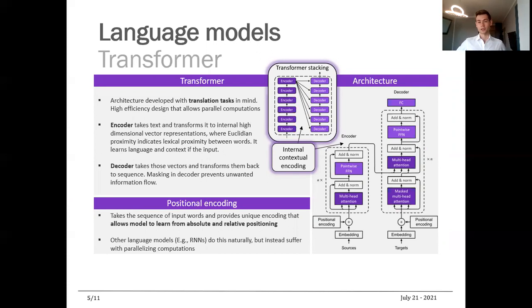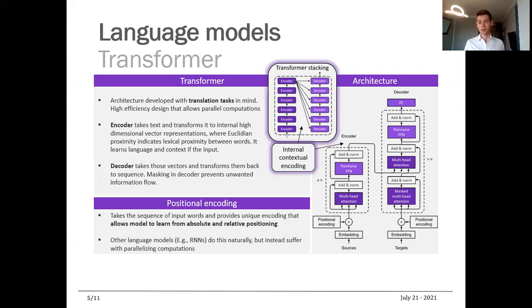That brings us to the models being used to do this classification. We're going to be talking about BERT and XLNet, but those two models depend on something called a transformer architecture. So first we're going to discuss that. The transformer architectures were developed primarily with translation tasks in mind. They can also be used for other sequence-to-sequence tasks, but for the sake of this discussion, let's focus on translation tasks.